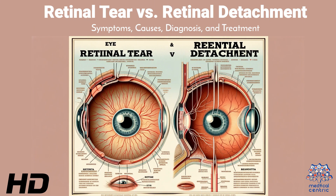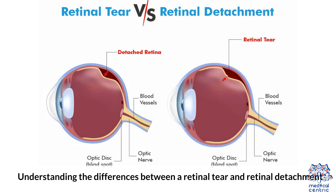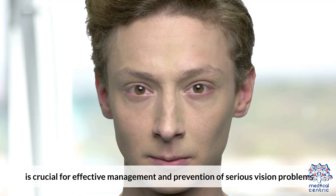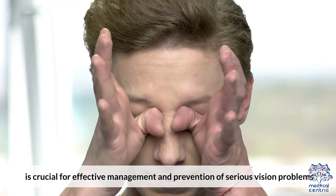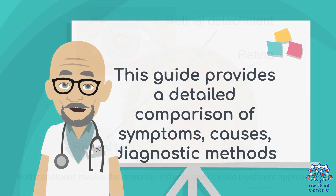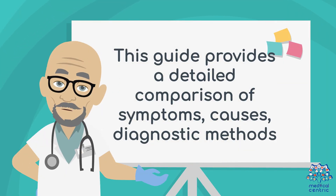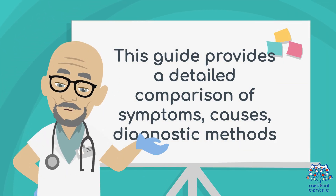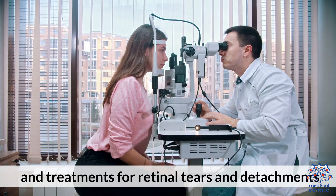Today's medical-centric topic is Retinal Tear vs. Retinal Detachment: Symptoms, Causes, Diagnosis, and Treatment. Understanding the difference between a retinal tear and a retinal detachment is crucial for effective management and prevention of serious vision problems. Both conditions involve the retina but differ in severity and treatment approaches. This guide provides a detailed comparison of symptoms, causes, diagnostic methods, and treatment for retinal tears and detachments.